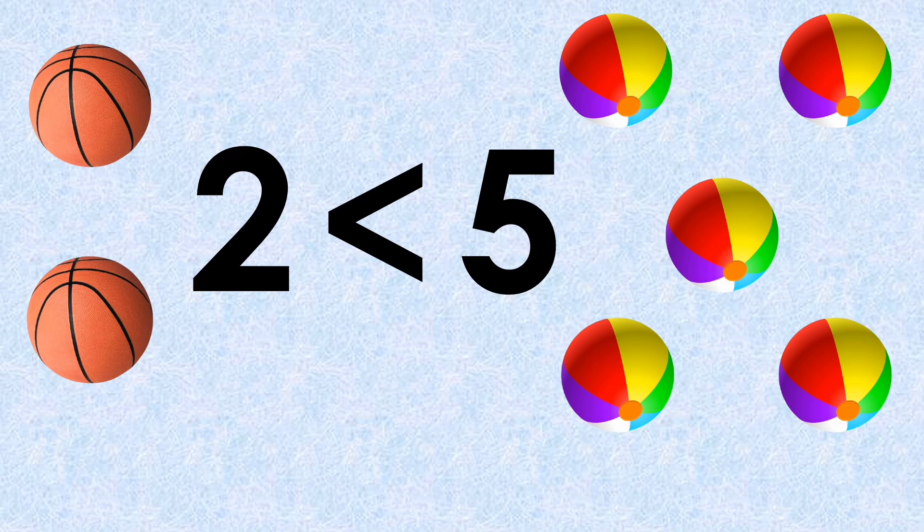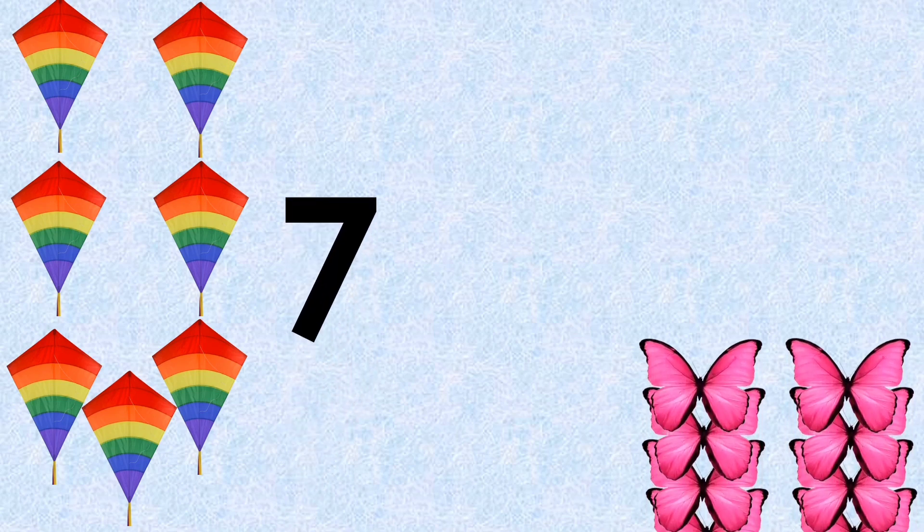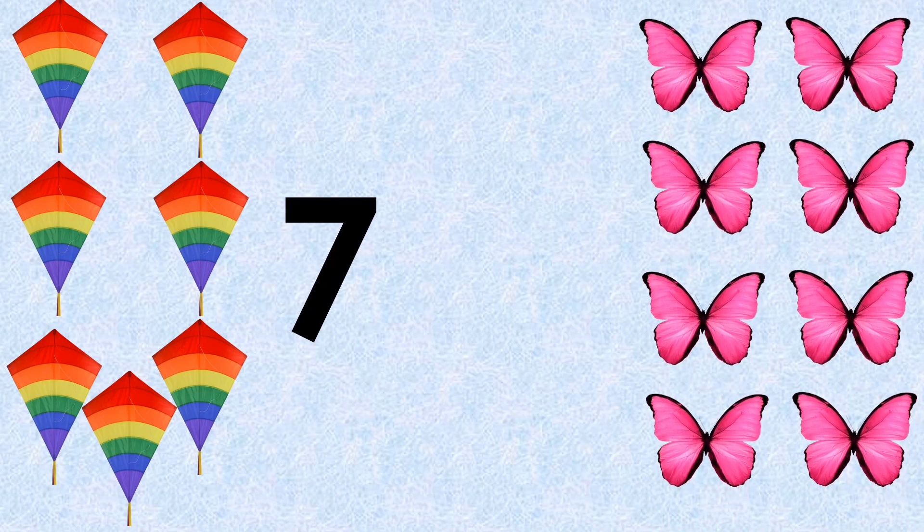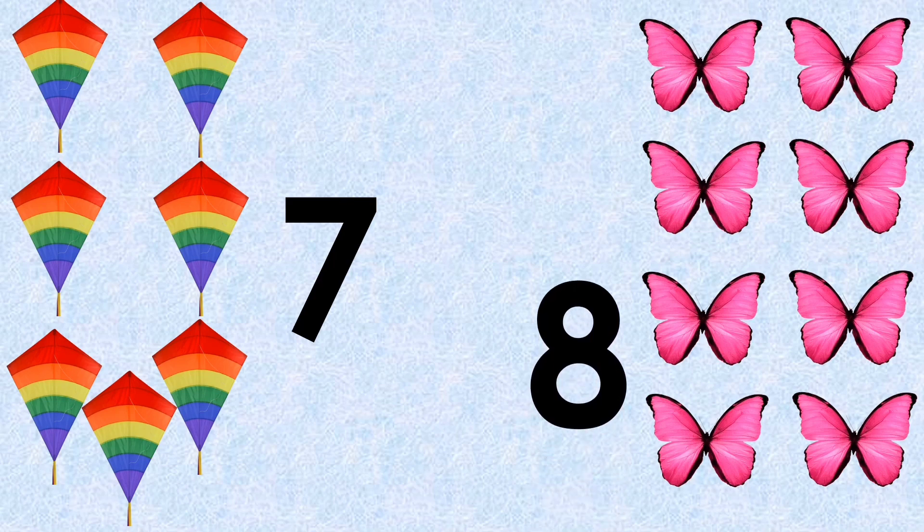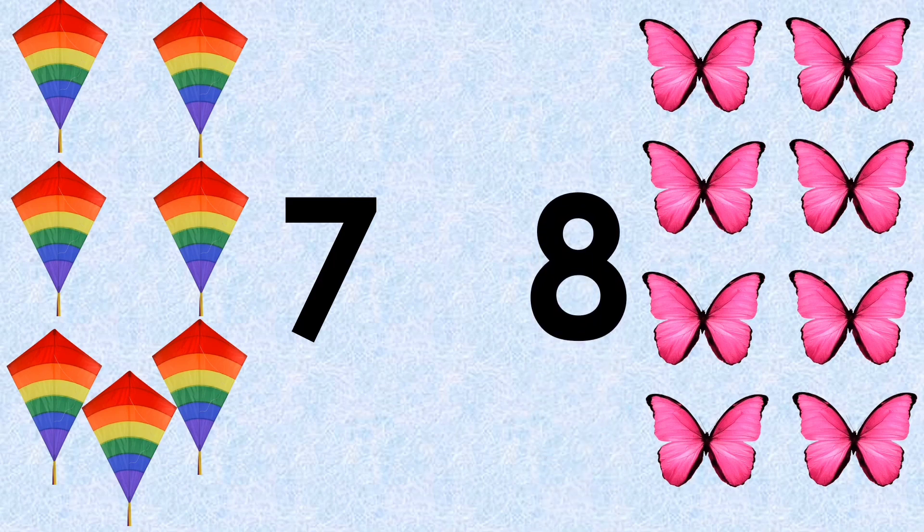Number of kites on one side: seven. Number of pink butterflies on the other side: eight. Which number is bigger? Yes, eight. Here we will put the less than sign. How we will read this? Seven is less than eight.